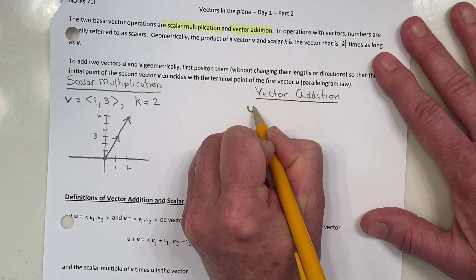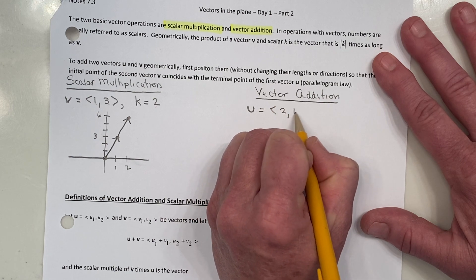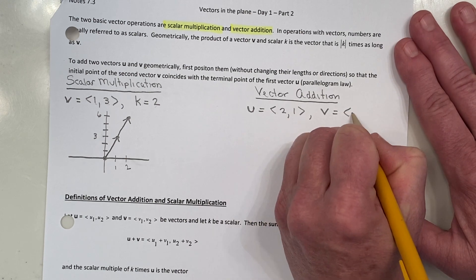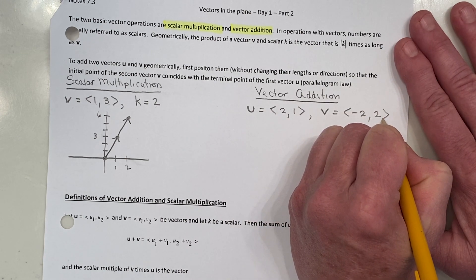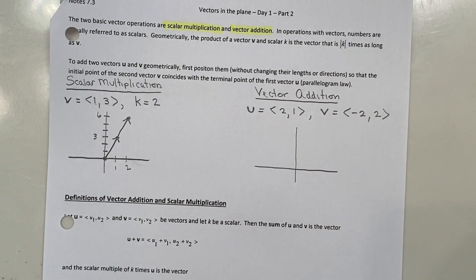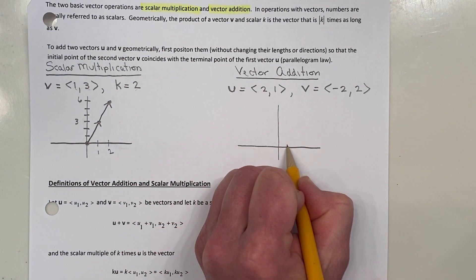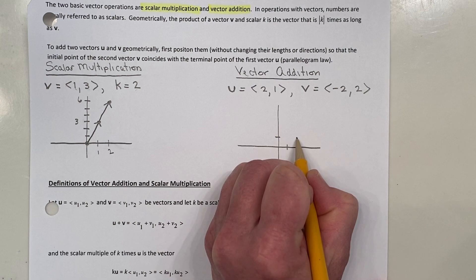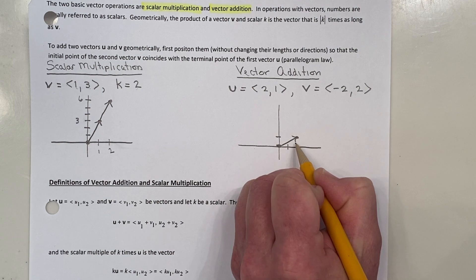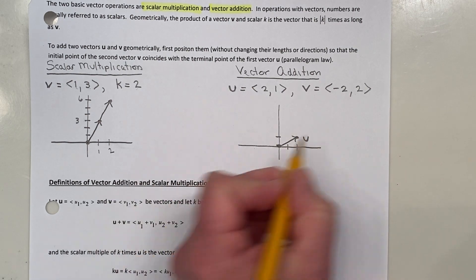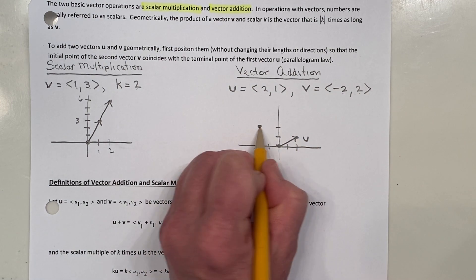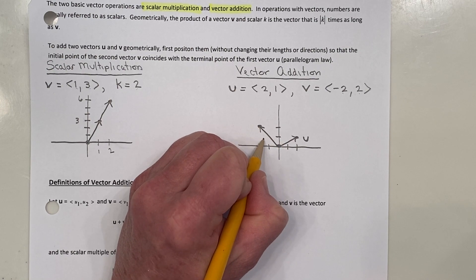Let's look at vector addition geometrically. Let's say we have vector u whose components are (2, 1) and a second vector that also starts at the origin whose components are (-2, 2). Let's draw a coordinate plane and plot each of these vectors. Vector u goes to (2, 1), starting at the origin — that's vector u. Vector v is plotted at (-2, 2), connected from the origin with an arrow — that's vector v.